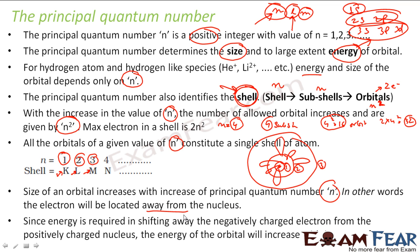Since energy is required in shifting away the negatively charged electron from the positively charged nucleus, the energy of orbital will increase with increase in principal quantum number. So the energy will increase. The fourth shell will have more energy, third will have less energy, two will have less, one will have less. That's why this gets filled fast, then this, then this. We will explain more in detail in the next slide.